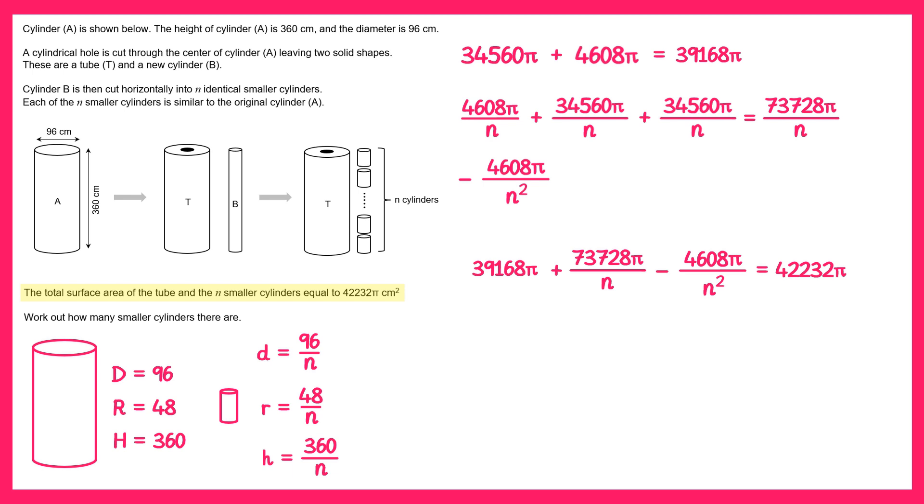We now just have an equation to solve in terms of n. Let's take away 39,168 pi from both sides, that gives you this. Then we could multiply both sides of this by n squared. If we multiply the first term by n squared we get this. The second term by n squared we just get 4,608 pi, and the right hand side by n squared, we get this.